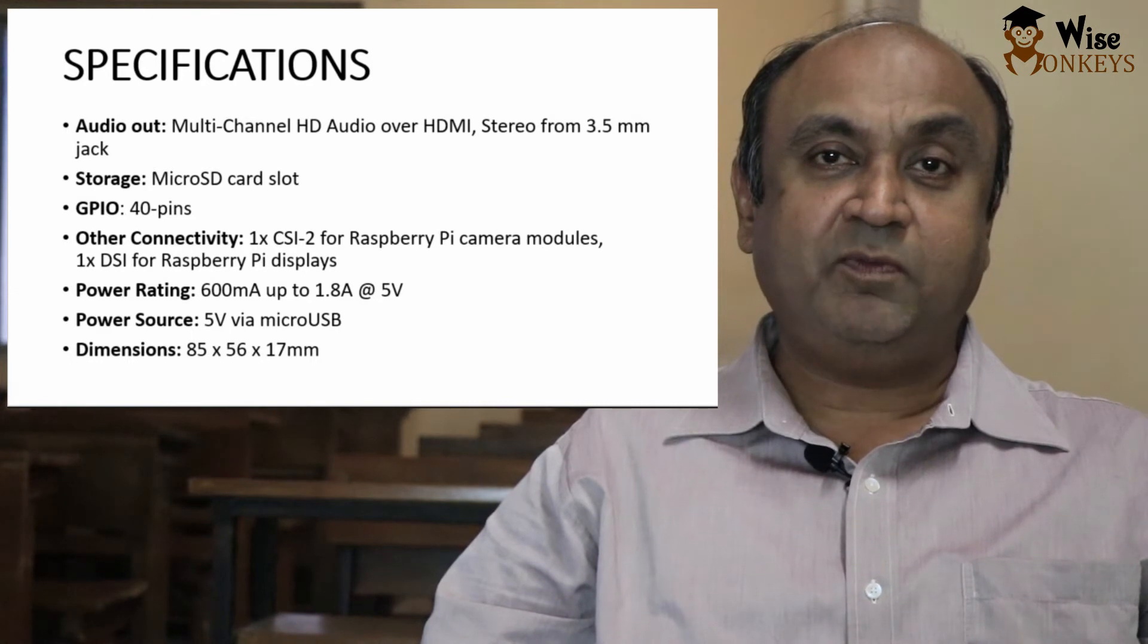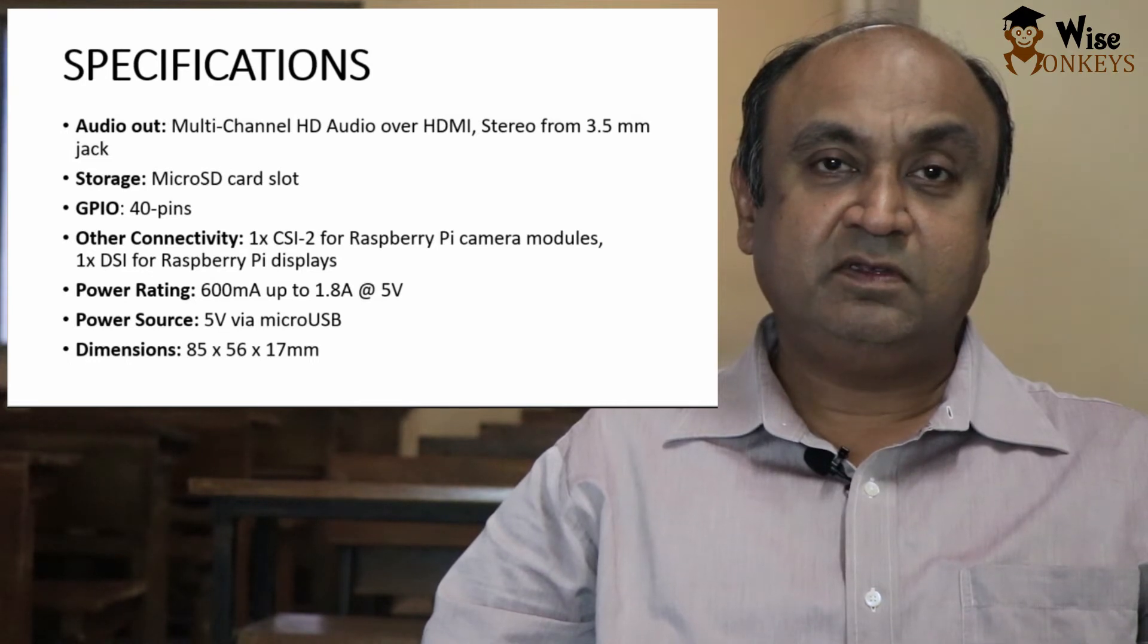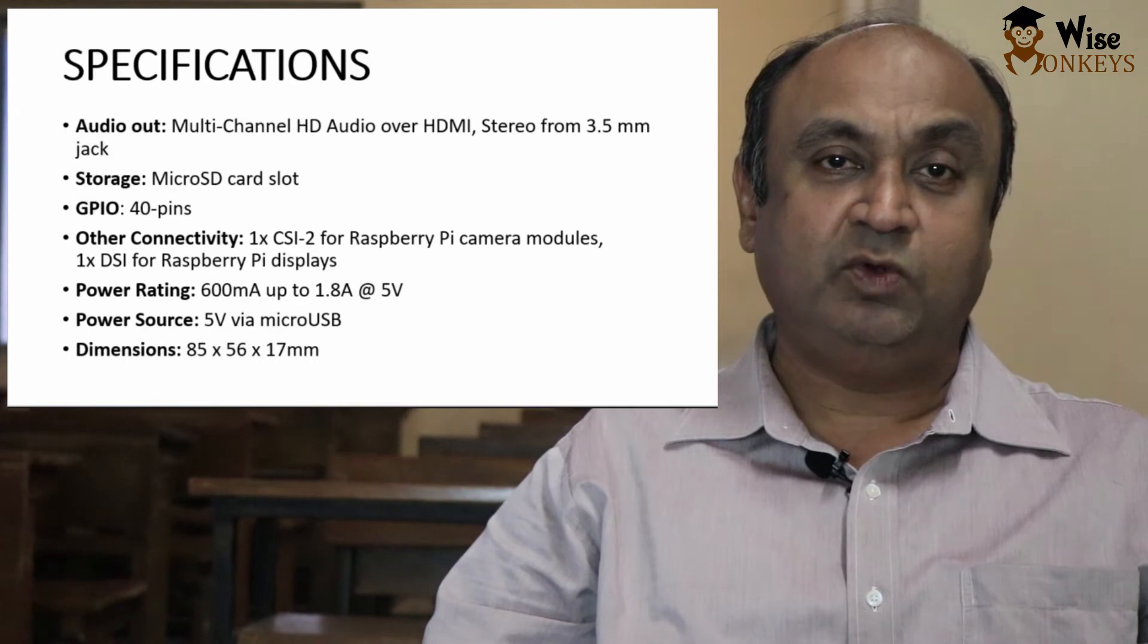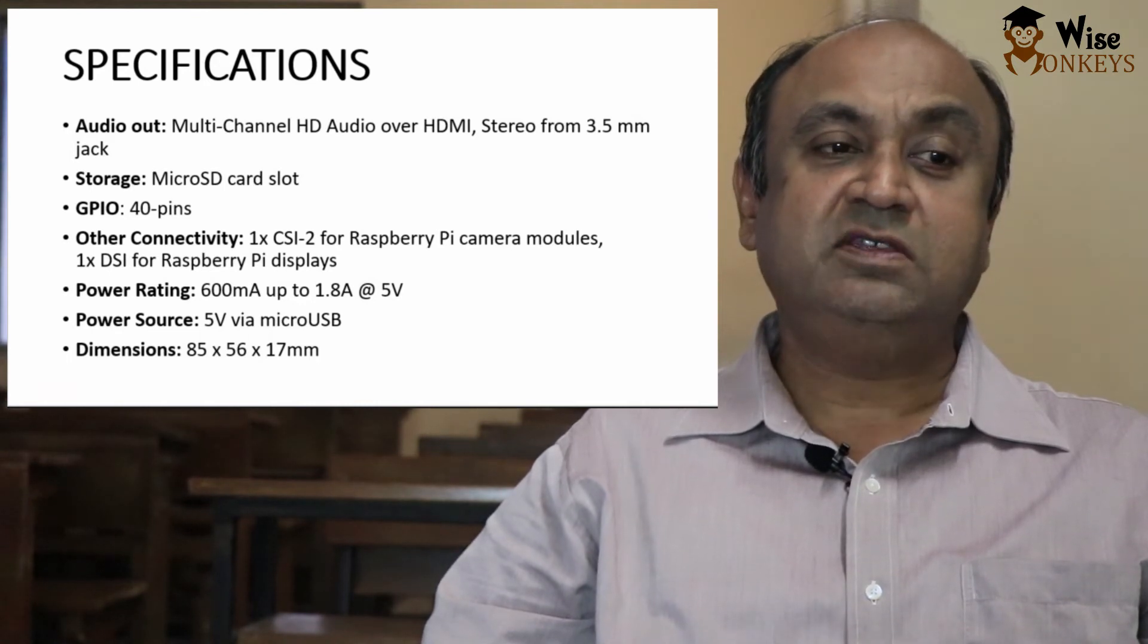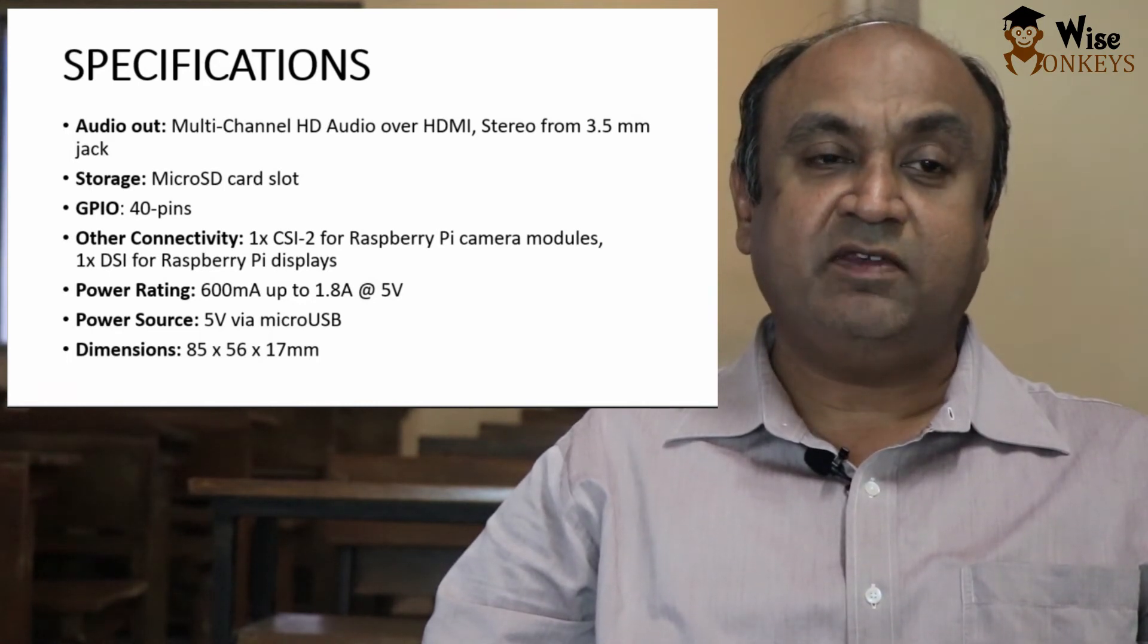It has a slot for micro SD card. It has 40 pin GPIO. Other connectivities are camera modules and DSi for Raspberry Pi displays. The power rating is 600 mAh up to 1.8 mAh at 5 volts. It needs 5 volt micro USB power source. The dimensions are 85 x 56 x 17 mm.